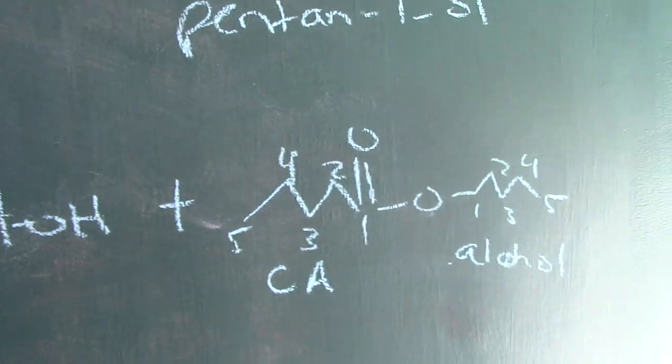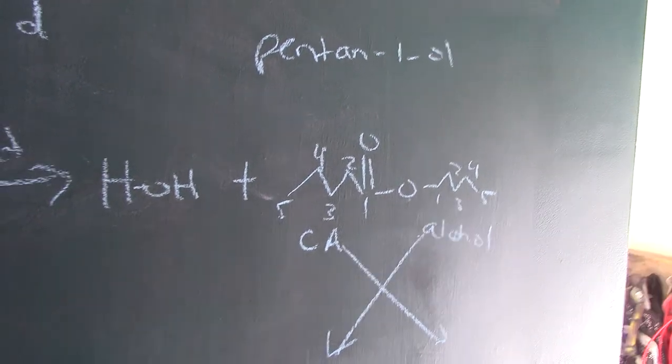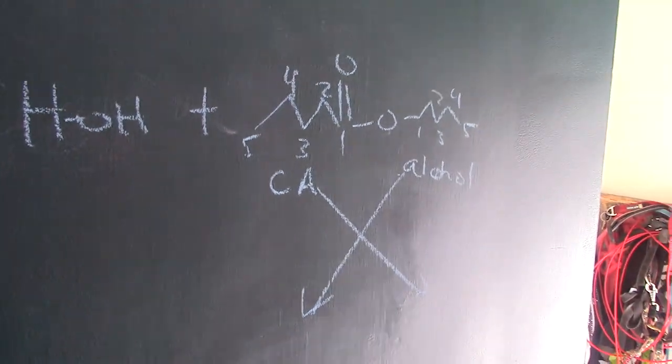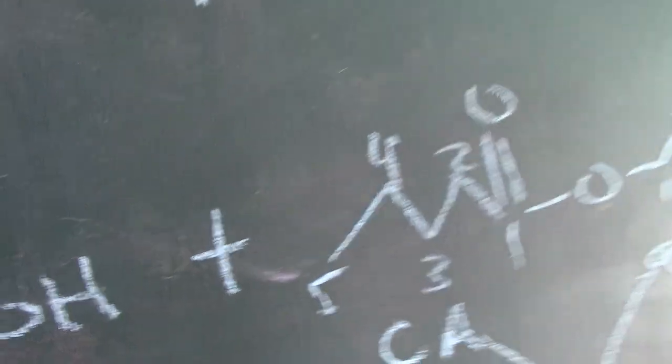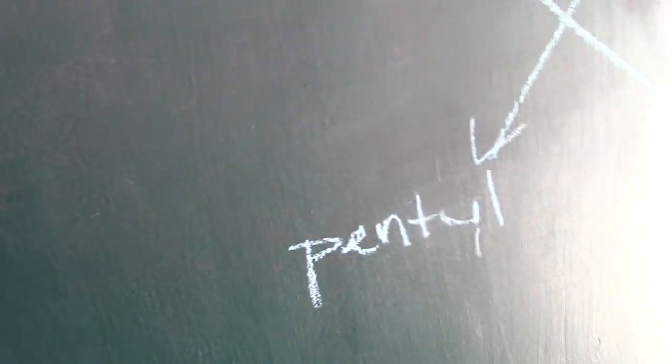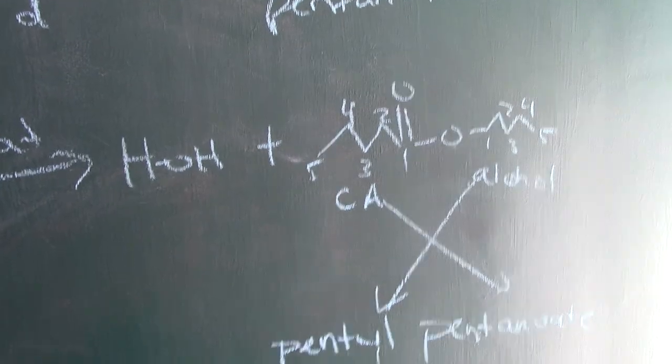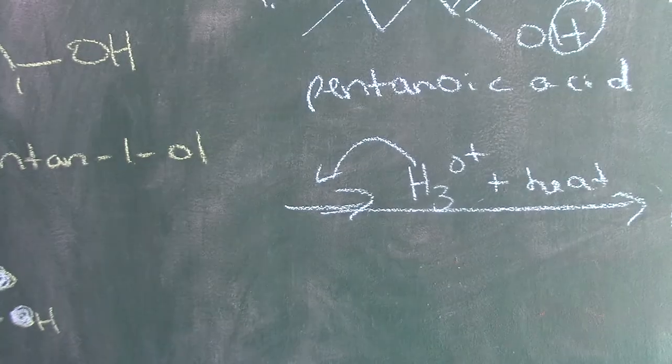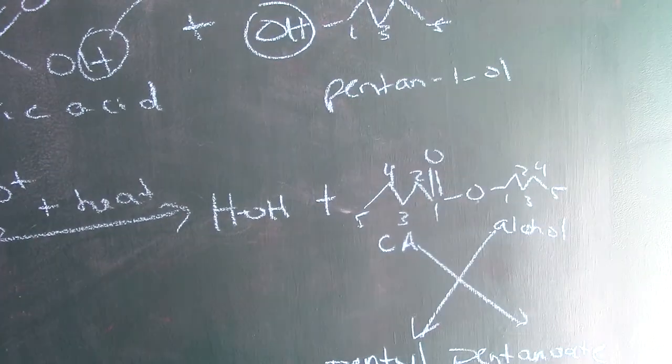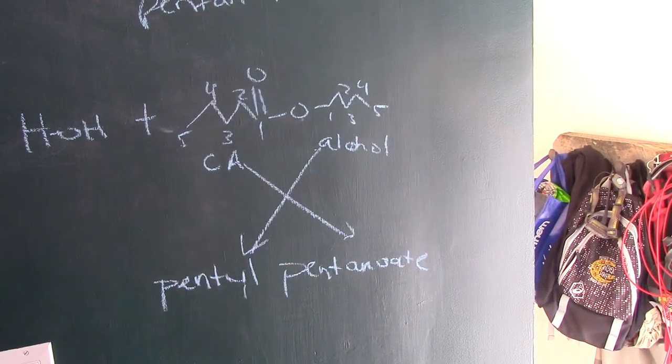These are the products of an esterification reaction. To name the ester, we name the alcohol first and the carboxylic acid second. The single-bond O is always where the alcohol portion is. Rather than 'pentanol,' we drop the '-anol' and write 'pentyl.' Rather than 'oic acid,' we write '-oate.' So the product is pentyl pentanoate. The reaction of carboxylic acid and alcohol with heat and acid gives water and an ester.